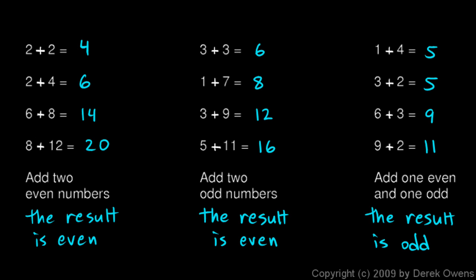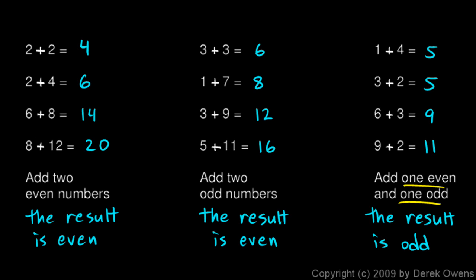You can think of these as little rules: adding two even numbers gives you an even result; adding two odd numbers gives you an even result; adding one even and one odd number gives you an odd result. But I don't recommend memorizing those rules — it's easy to get them mixed up. What I do is just work out a quick simple example in my head: 2 plus 4 is 6, so adding two even numbers gives an even number. I figure these rules out on the fly rather than memorizing them. What you should know is that these patterns are always true.